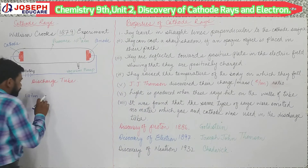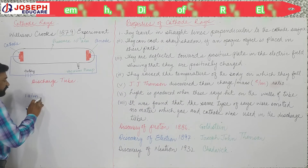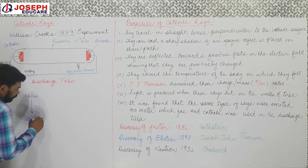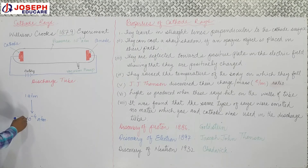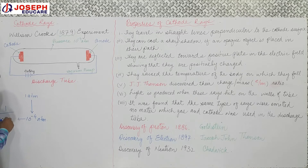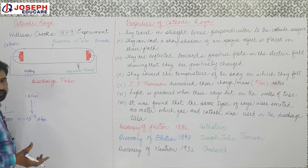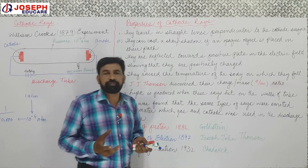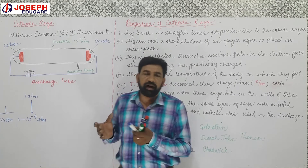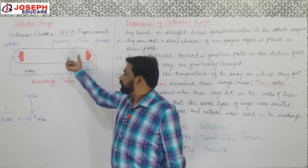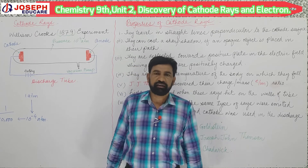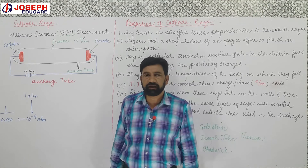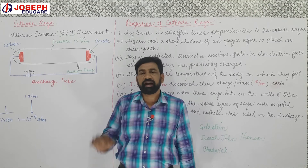That one ATM pressure was reduced up to 10 to the negative 4 ATM. 10 to the negative 4 ATM means one ten-thousandth times less pressure — that is, 10,000 times less than atmospheric pressure was developed inside. Before this, 10 to the negative 6 had been developed.